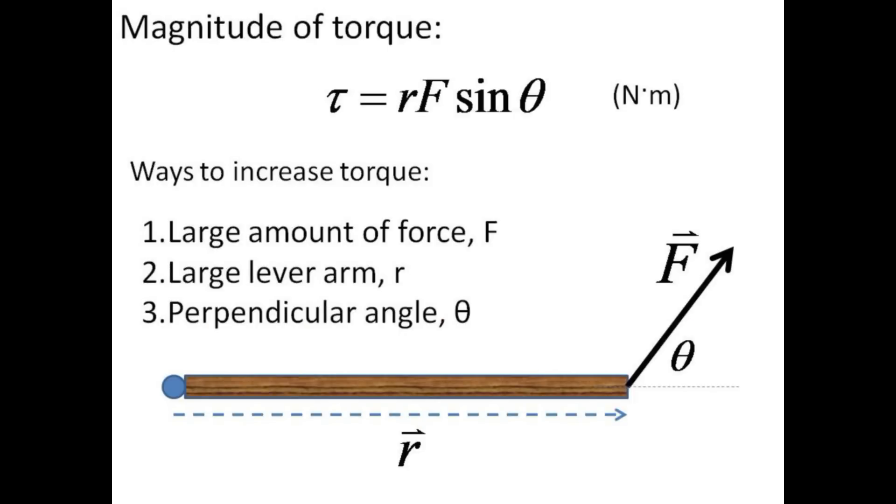The magnitude of torque is given by the product of force times radius times the sine of the angle. Torque is enhanced by increasing the force, increasing the radius of the lever arm, or making the angle between them perpendicular.